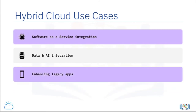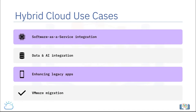Enhancing legacy apps is another use case: an increasing number of organizations are using public cloud services to upgrade the user experience components of their on-premises applications and deploy them globally to new devices, while incrementally modernizing their core business systems. VMware migration is also common, with more organizations lifting and shifting their on-premises virtualized workloads to a public cloud without conversion or modification, to reduce their on-premises data center footprint and scale without added capital expense.